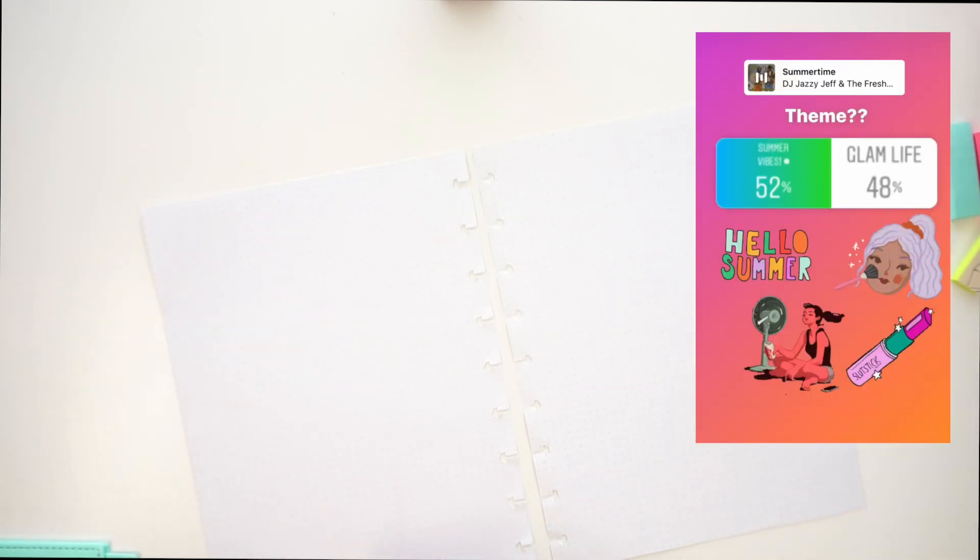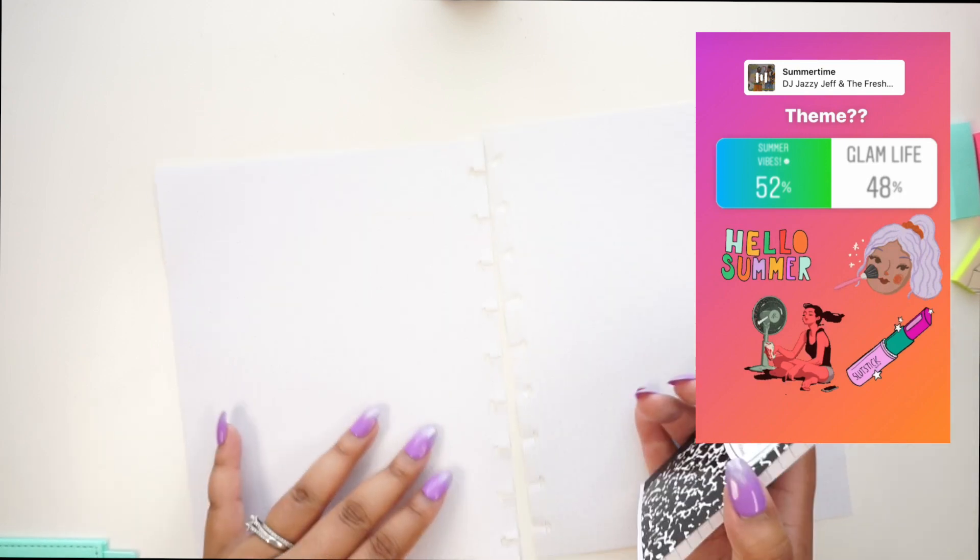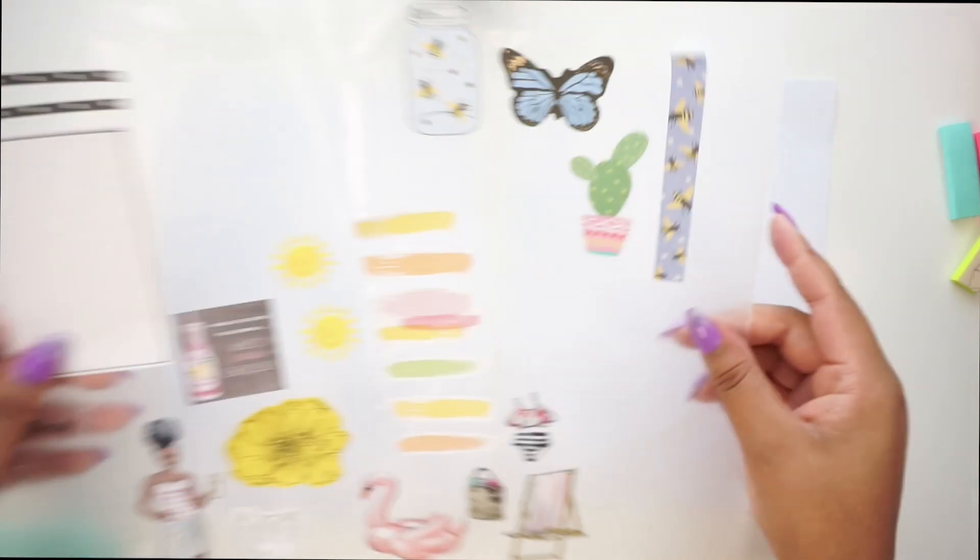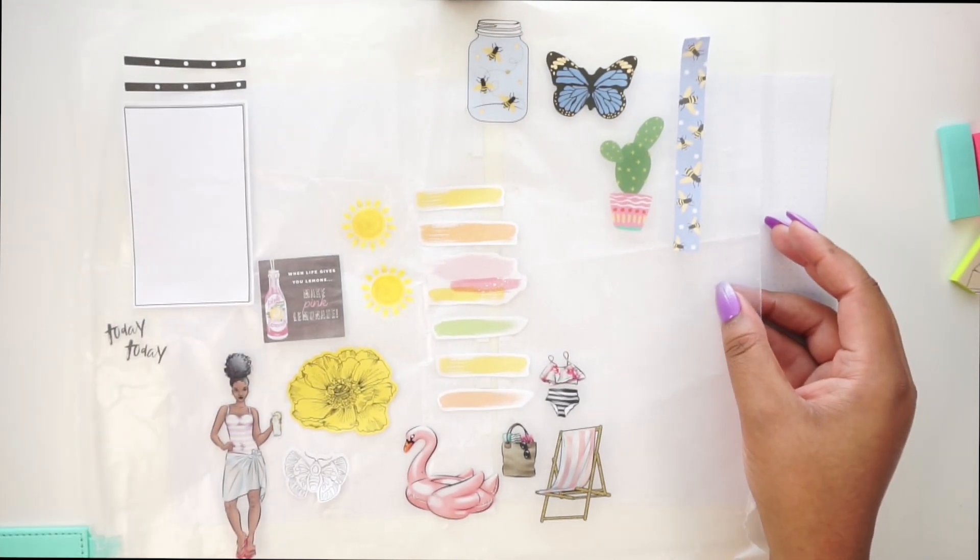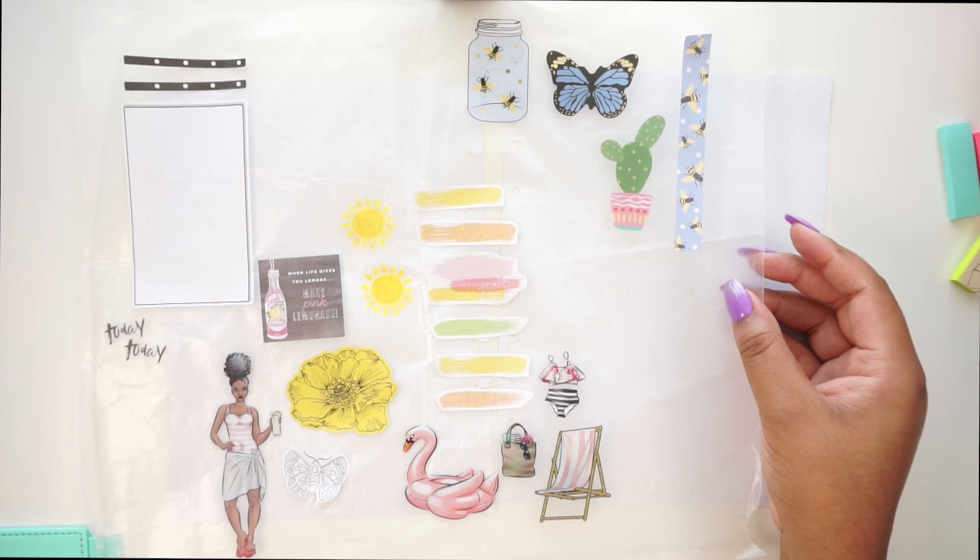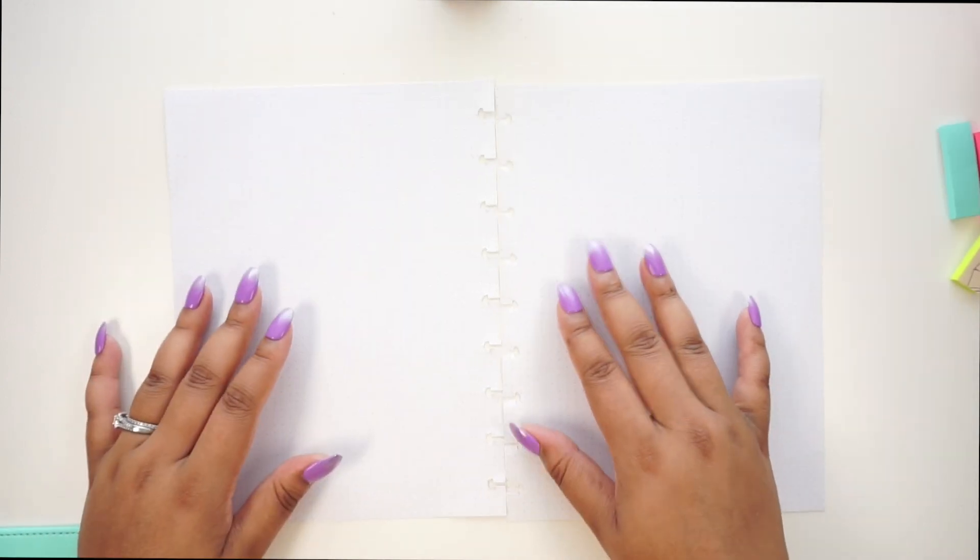You guys voted for a summertime theme, summer vibes. It was either summer vibes or glam life, and you guys wanted summer vibes. That's what we're going to do. I've already pulled some stickers here, but I feel like some things are going to change before I commit to them. I've pulled from several sticker books and I'll talk about that later.